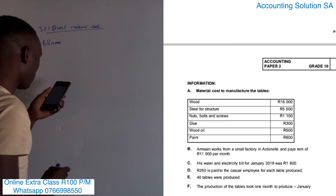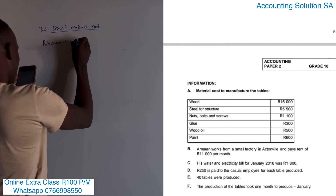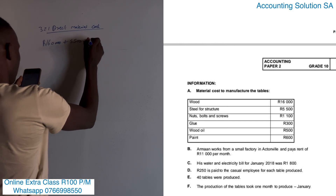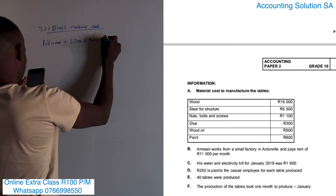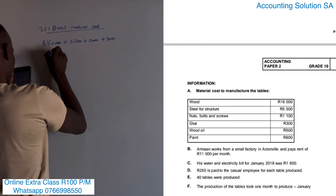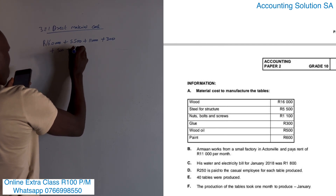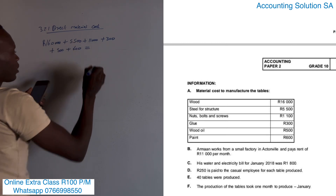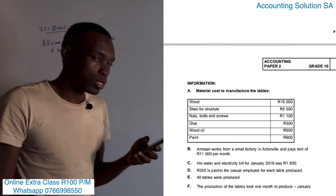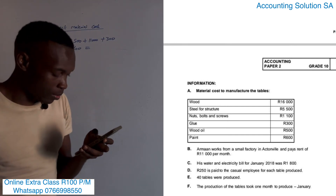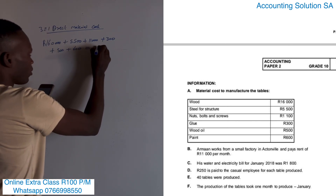From Information A, the material costs are: wood R16,000, plus R5,500, plus R1,100, plus glue R300, plus wood oil R500, plus paint R600. All of these are direct material costs used to produce the tables. If you add all of these, you will get a total of R24,000.